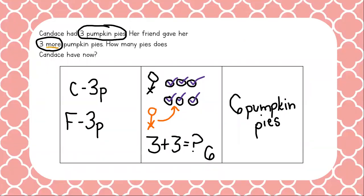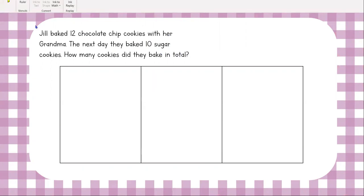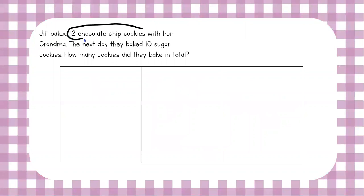Let's move to our next problem. Jill baked 12 chocolate chip cookies with her grandma. The next day they baked 10 sugar cookies. How many cookies did they bake in total? Let's read it again: Jill baked 12 chocolate chip cookies — I'm going to circle it. The next day they baked 10 sugar cookies — I'm going to circle it. How many cookies did they bake in total? That's a key word.